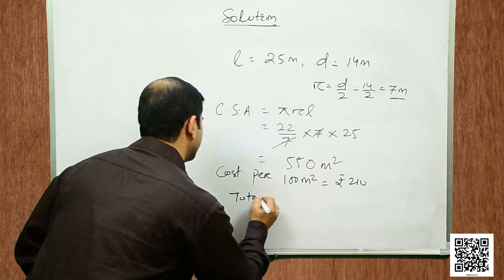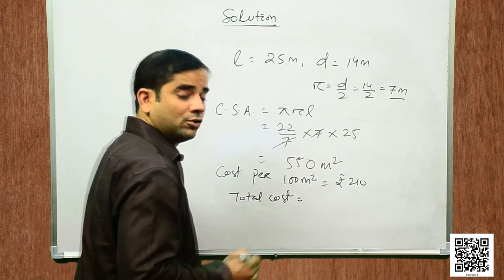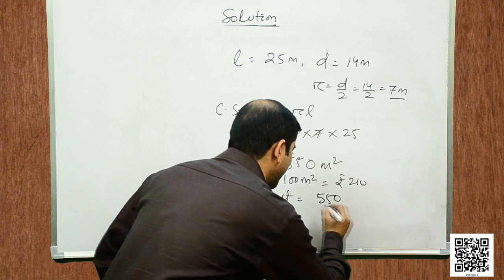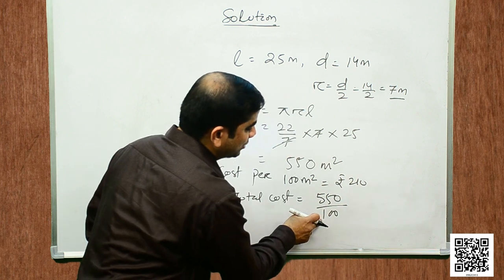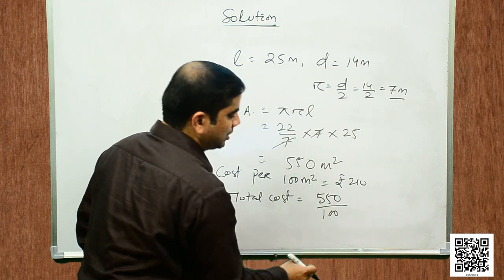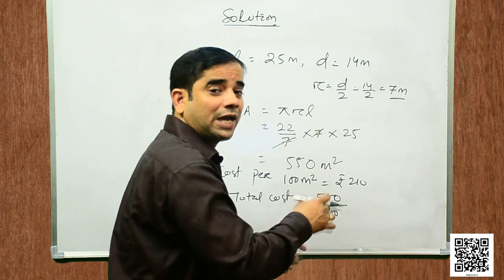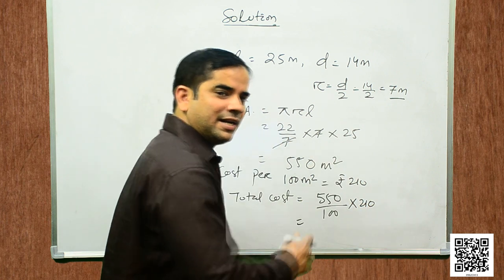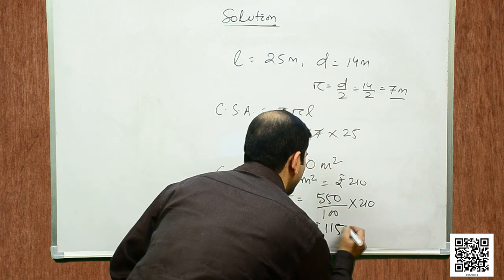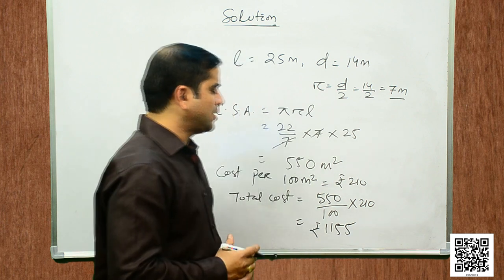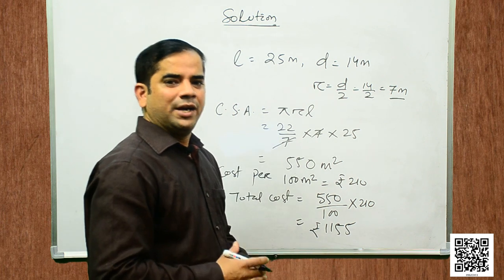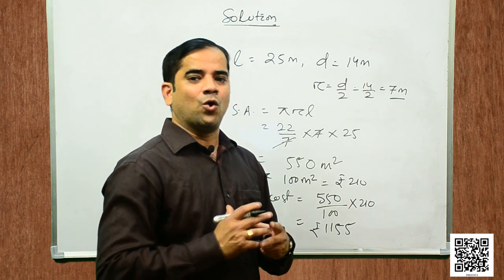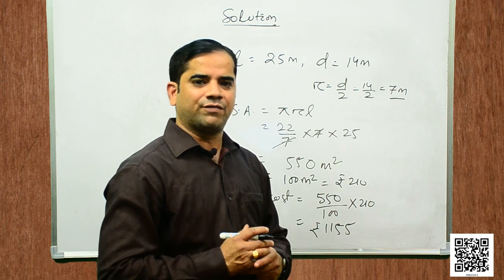Total cost = (550 ÷ 100) × 210 = rupees 1155. So, it will cost rupees 1155 for whitewashing the curved surface of this conical tomb. Hope you understand the solution for question number 6.